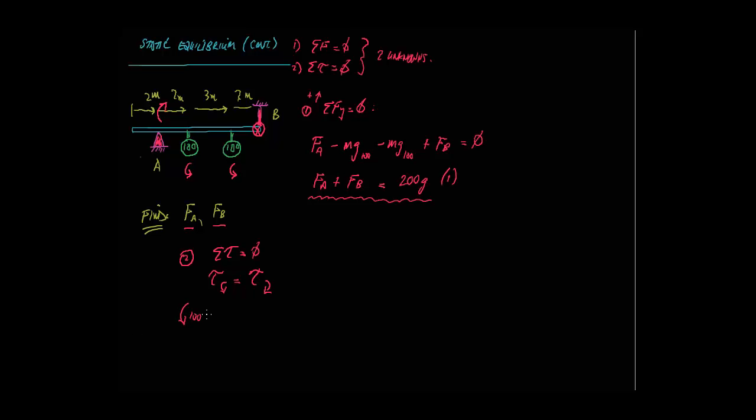So I'm going to get the 100 here. The torque of the other 100 has to equal, for this to be in static equilibrium, to be in sum of torques of zero, has to equal the force at A times its distance, which is trying to go the other way. That means I have MGD. MGD has to equal force at A times distance.